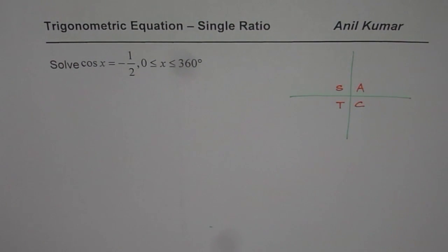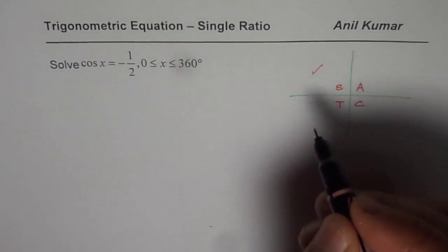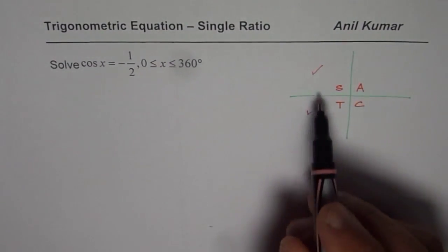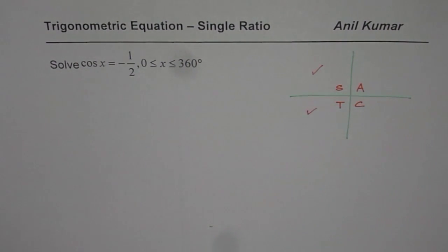Now when we say cos value is negative that means we are expecting answer in quadrant 2 or in quadrant 3. So we are expecting two answers. That is one thing we should remember.